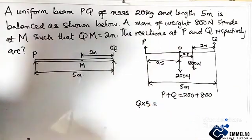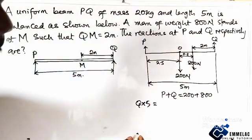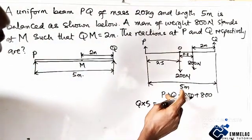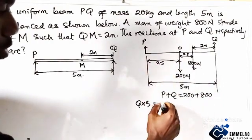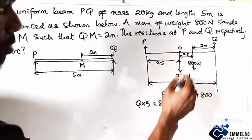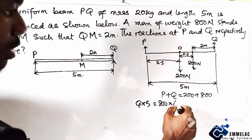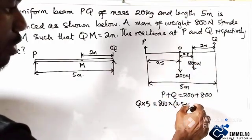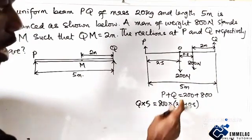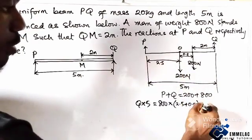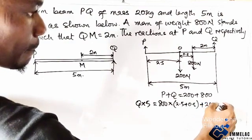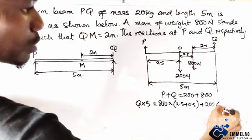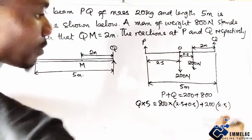Now resolving this, that will be 800 times the distance here which will be 2.5 plus 0.5, plus 200 times 2.5.